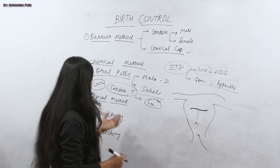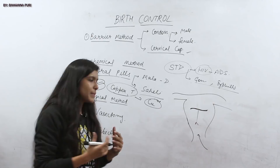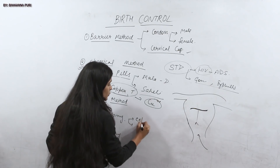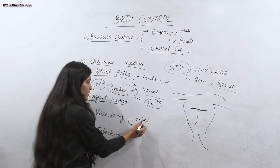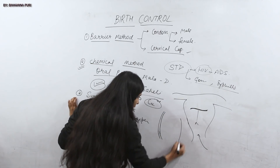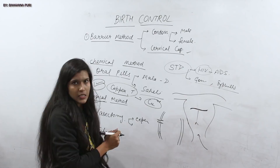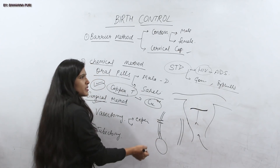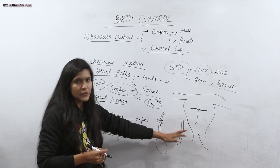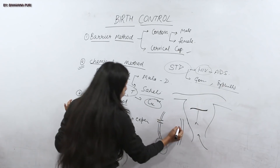These two surgical methods are the most effective, and the most important thing is that they are everlasting, meaning permanent. However, the reversibility chances are very poor. Also, since it is a surgical method, it is expensive. In vasectomy, which is for males, the vas deferens is individually cut and tied up so that the sperm produced in the testes cannot move into the female body. This is a permanent method.